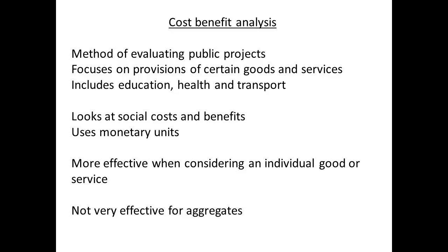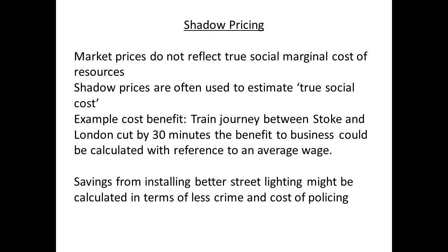The method that is most favoured is to use cost-benefit analysis, to try and use monetary units to determine social costs and benefits. This has proved fairly effective in considering individual goods and services, but is less effective when considering aggregates. Since market prices will usually not reflect the true social marginal cost, the method of shadow pricing is often used. To estimate a social benefit from an improved faster train service, the time saved could be measured with reference to the average wage. The value of street lighting could be measured in terms of less policing if it reduced crime.